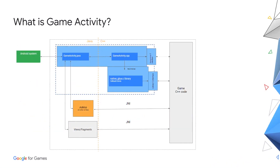So how is Game Activity designed? It contains two parts. One is the Java part — the Game Activity class — which is intended to interact with any existing UI toolkits such as ANZ or any other Android libraries which are available only in Java. The second part is the C/C++ part. It has native glue code which helps you to handle events in your C/C++ code and interacts with your C/C++ code.